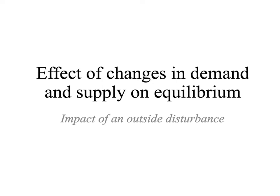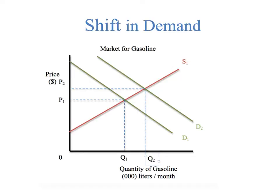Hey, everybody. Today we're going to take a look at the effect of changes in demand and supply on equilibrium. This is the impact of an outside disturbance, and this video is a follow-up to the video I made on market equilibrium. So what happens if one of the lines actually shifts? The best way to do this is with a diagram.